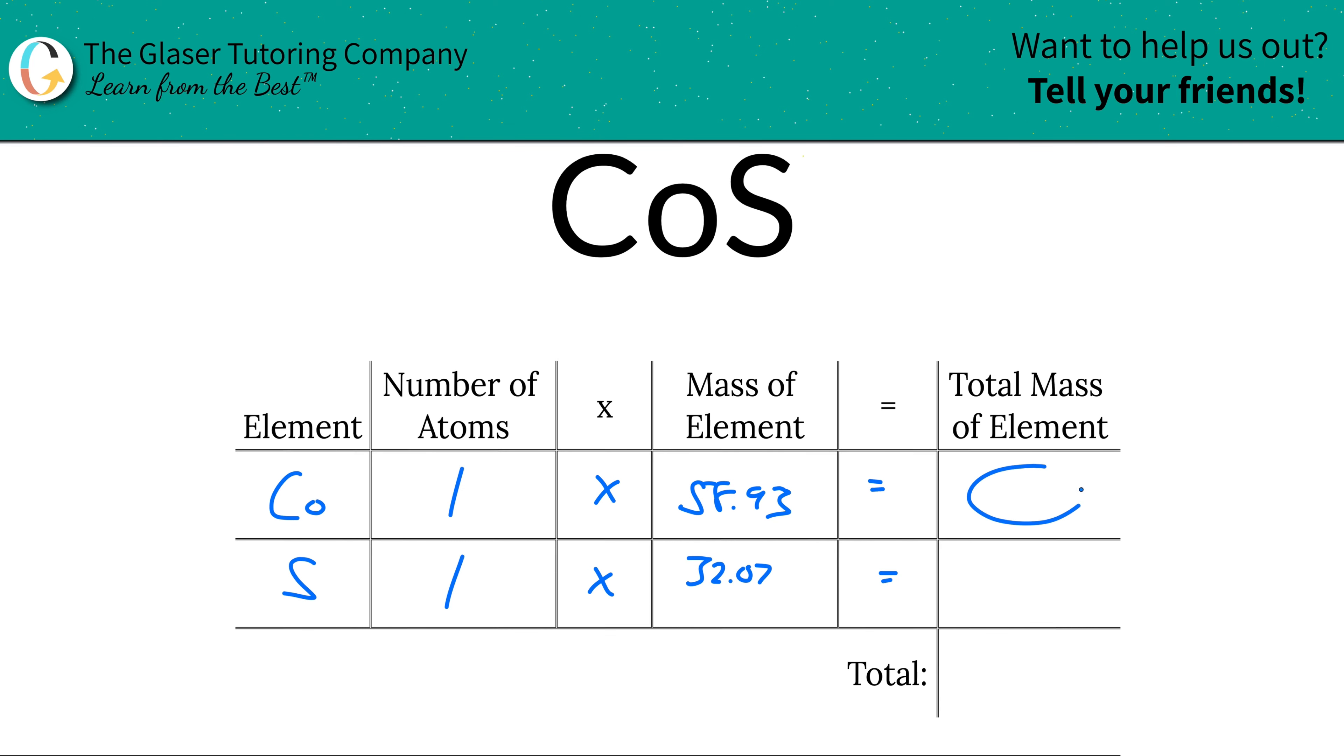We're simply going to find the total mass of each element. So we're going to take the 58.93 and multiply it by 1. And then the same thing here for the 32.07. Then we simply add these two up to find the total mass of the entire compound. And that works out to be about 91.